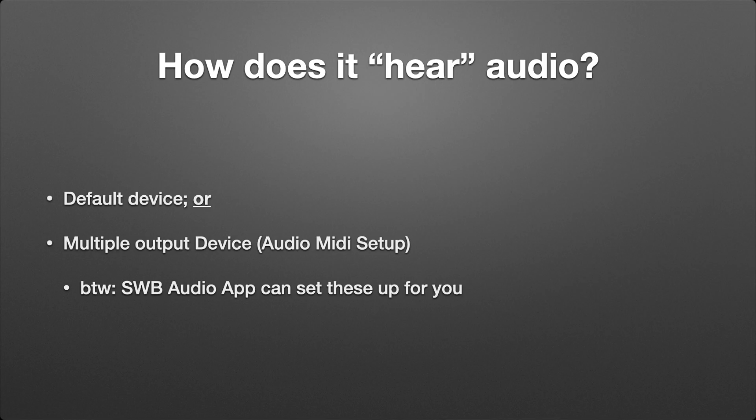I'm probably going to do another video on this because I think it ends up being a complicated topic, but I did want to briefly touch on how you get audio in there. So: default device, send it directly, or a multiple output device — which is done through Audio MIDI Setup. A multiple output device squishes multiple devices together, and if you send output to that combined device, the audio goes to all of them. So as long as SWB Audio Capture is getting audio somehow, it will appear on the other end and then you can go and do something with it.